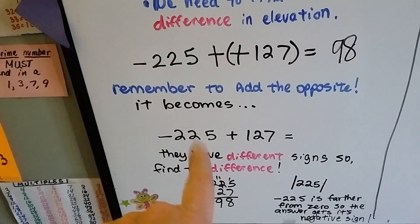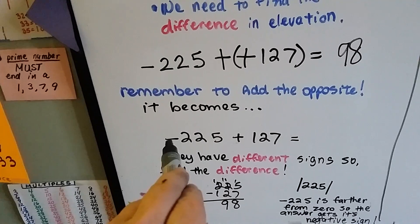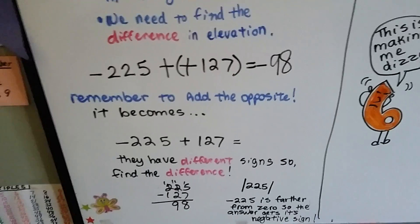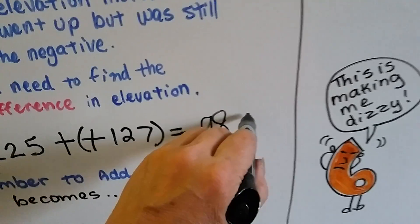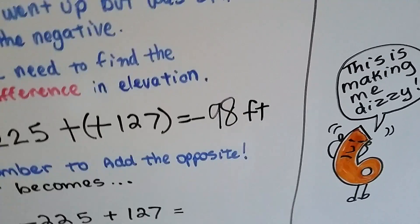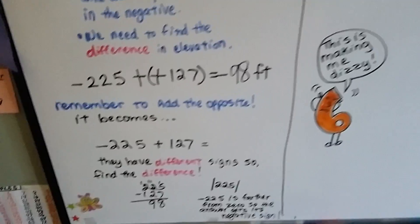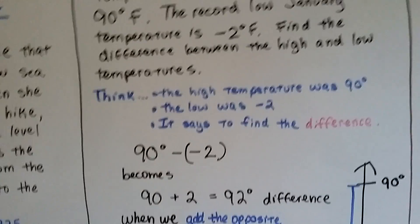Well, 225 is farther from zero, and it's got a negative sign. So our answer is going to have a negative. And we found our answer. Negative 98 feet. Okay? We can even label it if we want to do a real good job because it is feet, right? So we should always label things with degrees or whatever.